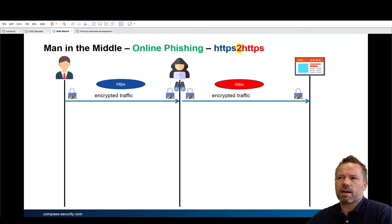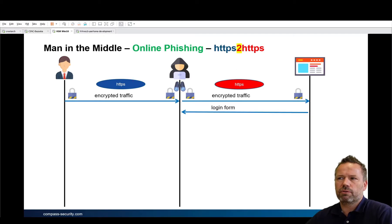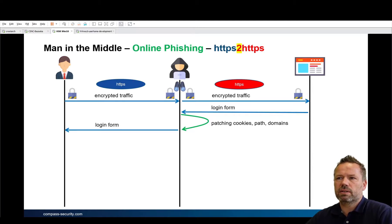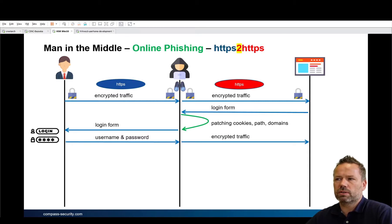Usually websites these days are using HTTPS, so the reverse proxy is capable of proxifying HTTPS to HTTPS. The login form comes back, the attacker can read out the responses from the website. When the user enters credentials, the username and password are sent to the reverse proxy — the online phishing server — where everything is forwarded to the destination server and can be read out by the man-in-the-middle.